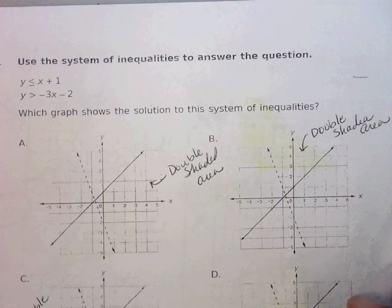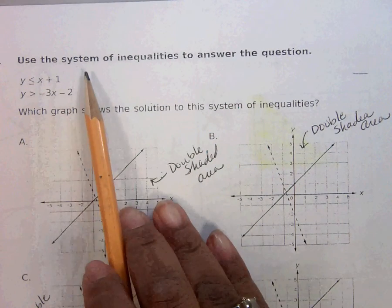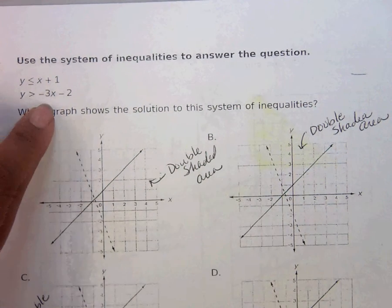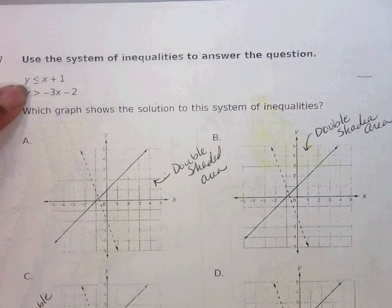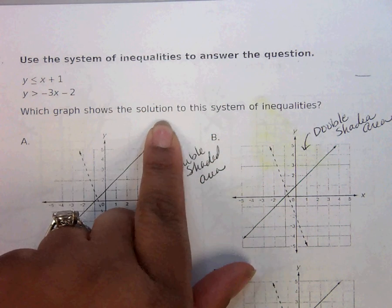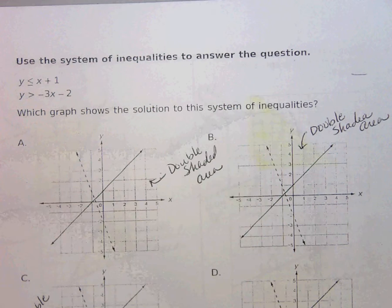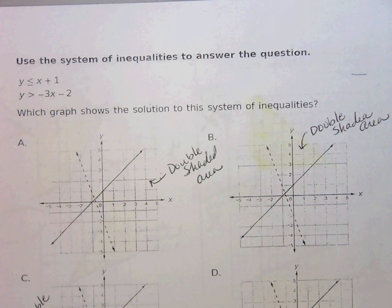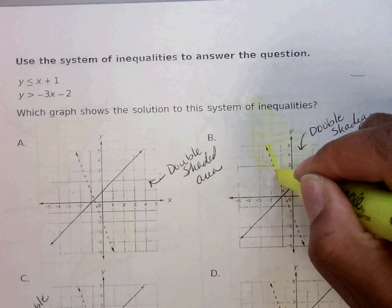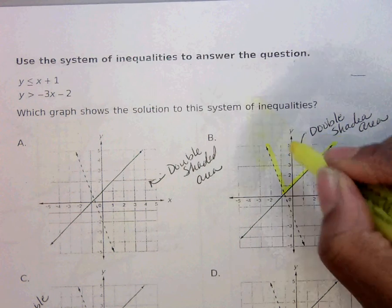Number seven. Use the system of inequalities to answer the question. Okay, so use this, both of these. Which graph shows the solution to this system of inequalities? Okay, so let's go ahead and highlight our double shaded areas, our solution set.